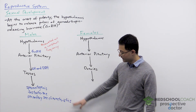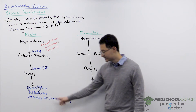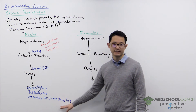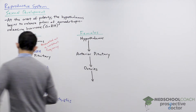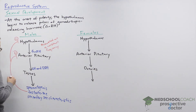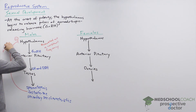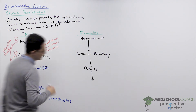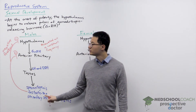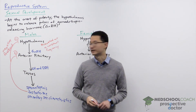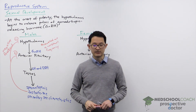Testosterone itself is a hormone important in producing these secondary sex characteristics, but it also has other actions. In particular, testosterone inhibits the hypothalamus and anterior pituitary — this is a type of negative feedback. When testosterone is released, it inhibits the hypothalamus from releasing GnRH and also inhibits the anterior pituitary from releasing FSH and LH.